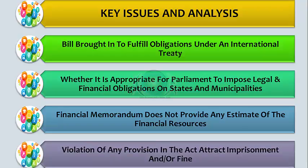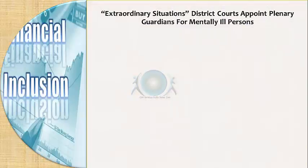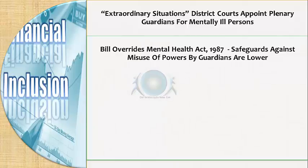The bill states that violation of any provision will attract imprisonment and/or fine. But given widespread obligations such as making all polling booths accessible to the disabled, many acts of omission or commission could be interpreted as criminal offenses, making this aspect subject to the success and practicability of implementation. In extraordinary situations, district courts may appoint a plenary guardian for mentally ill persons; however, the bill does not lay down principles for such determination consistently across various courts. The bill overrides the Mental Health Act of 1987, but the safeguards against misuse of powers by guardians are lower.